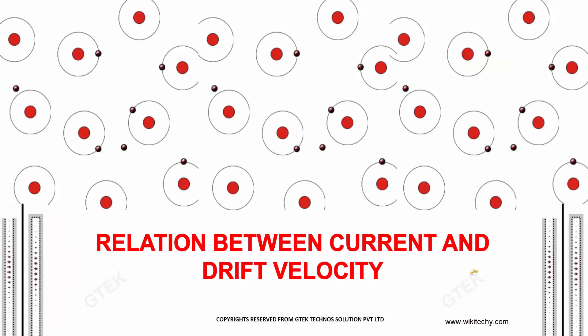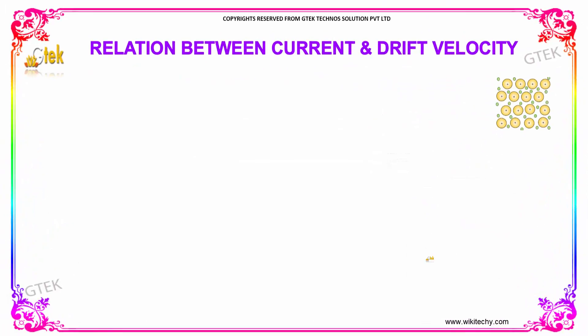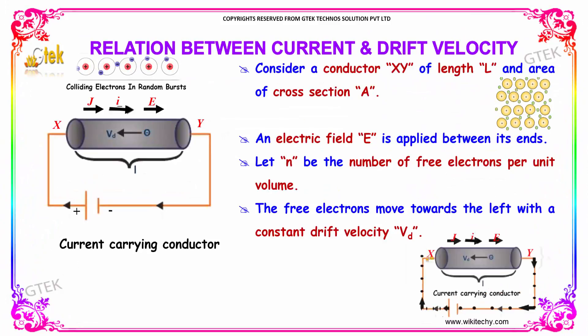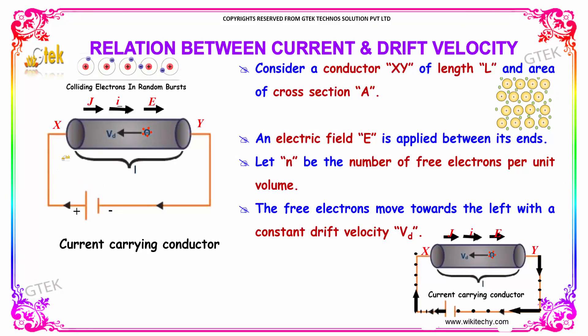Let's talk about the relation between current and drift velocity. Consider a conductor x, y of length L and area of cross-section A.